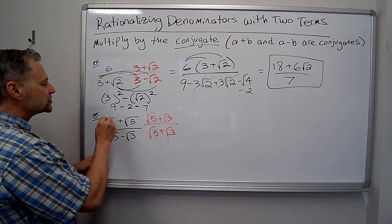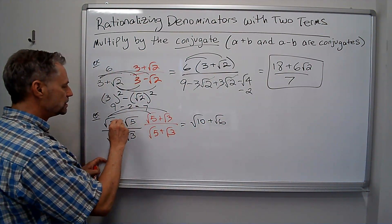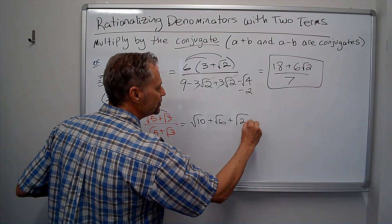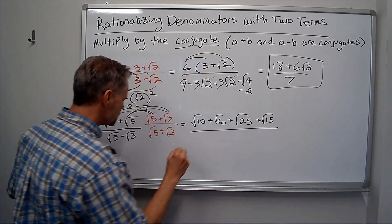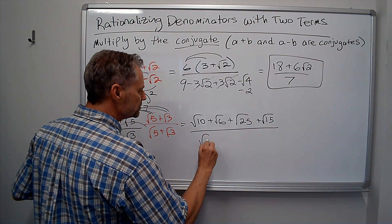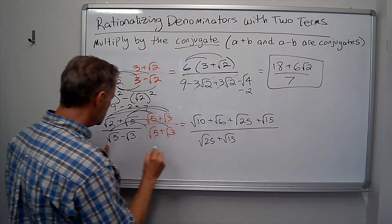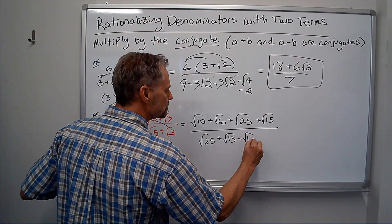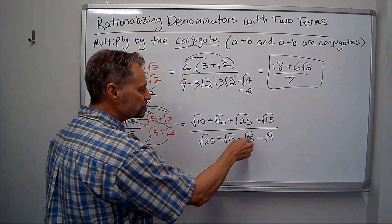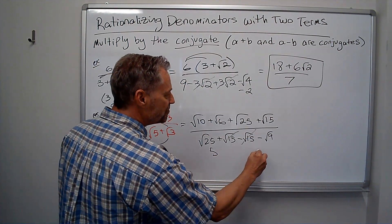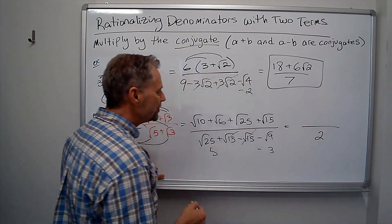So you get the square root of 10 plus the square root of 6 plus the square root of 25 plus the square root of 15. On the bottom, we're going to foil those. Square root of 25 plus the square root of 15 minus the square root of 15 minus the square root of 9. Again, the two middle terms cancel out. The bottom is 5 minus 3 which is 2.